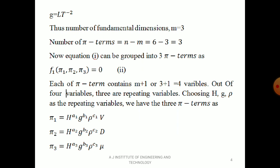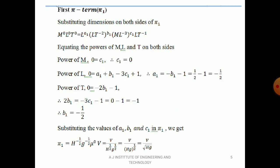With H, G, ρ as repeating variables, we write expressions for three pi terms: π₁ = H^a1 · G^b1 · ρ^c1 · V, π₂ = H^a2 · G^b2 · ρ^c2 · D, and π₃ = H^a3 · G^b3 · ρ^c3 · μ, where a1, b1, c1, a2, b2, c2, a3, b3, c3 are exponents.